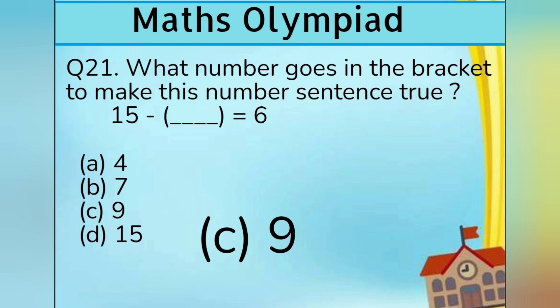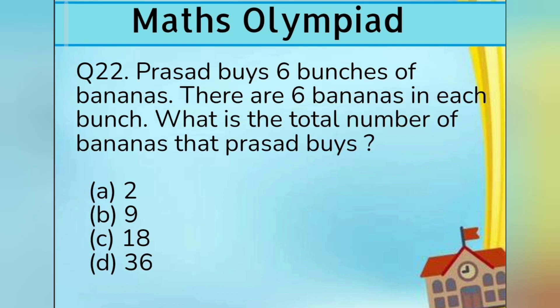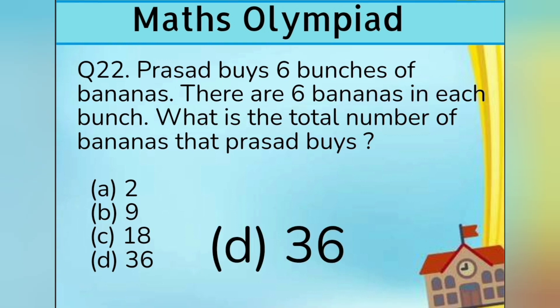Question number 22. Prasad buys 6 bunches of bananas. There are 6 bananas in each bunch. What is the total number of bananas that Prasad buys? Option A 2, Option B 9, Option C 18, and Option D 36. Answer is Option D 36.